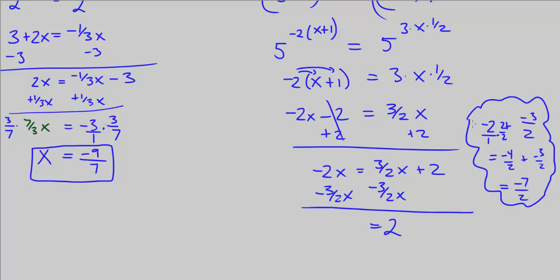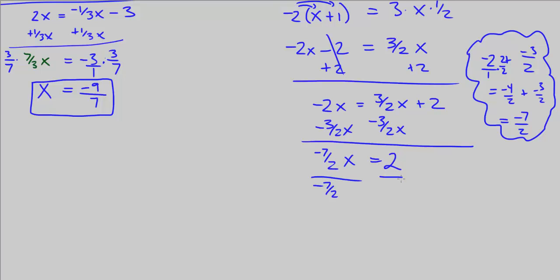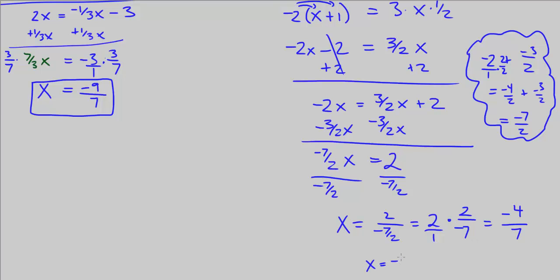Now we divide both sides by negative 7 halves — or multiply by the reciprocal. Those cancel out, leaving x equal to 2 over negative 7 halves, which is 2 times 2 over negative 7, giving negative 4 over 7. So x is equal to negative 4 over 7. That concludes CPM Pre-Calculus Chapter 3, Number 80.